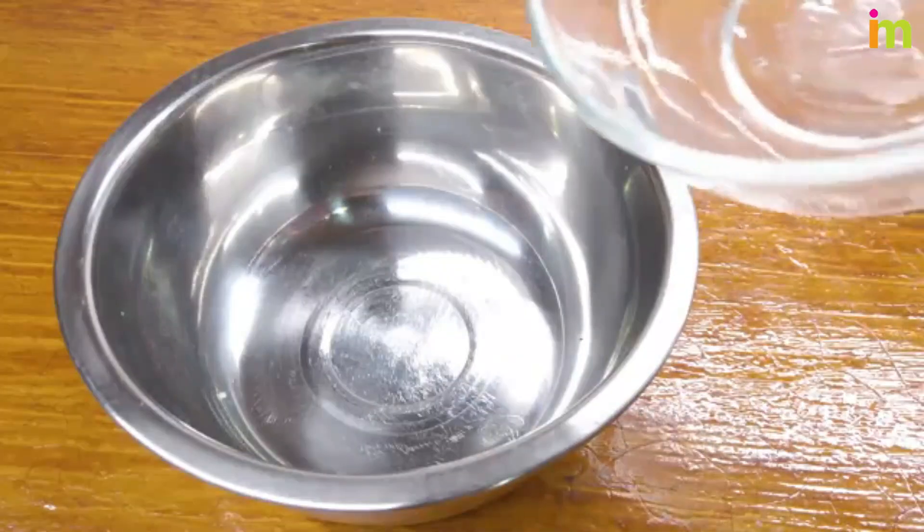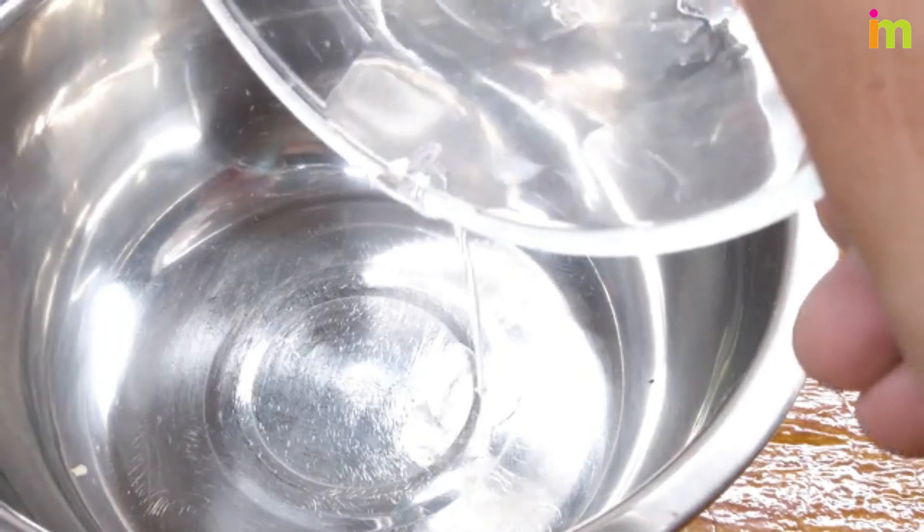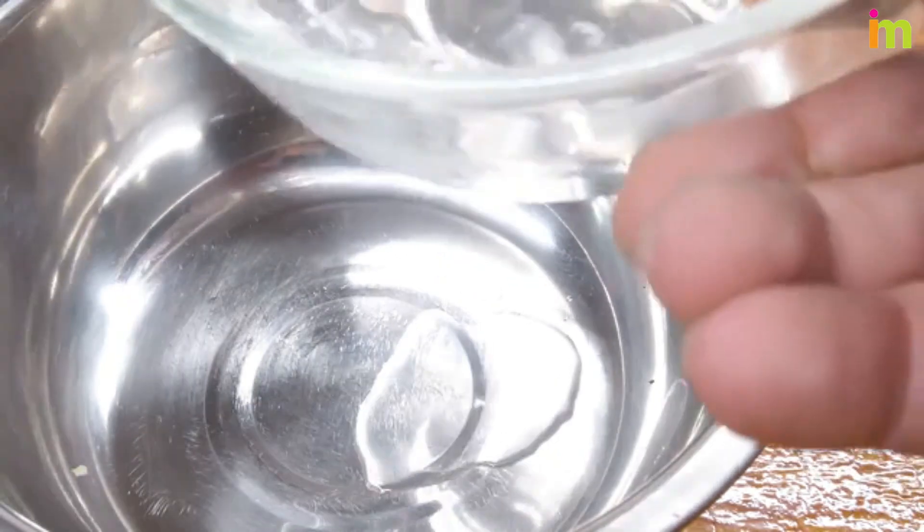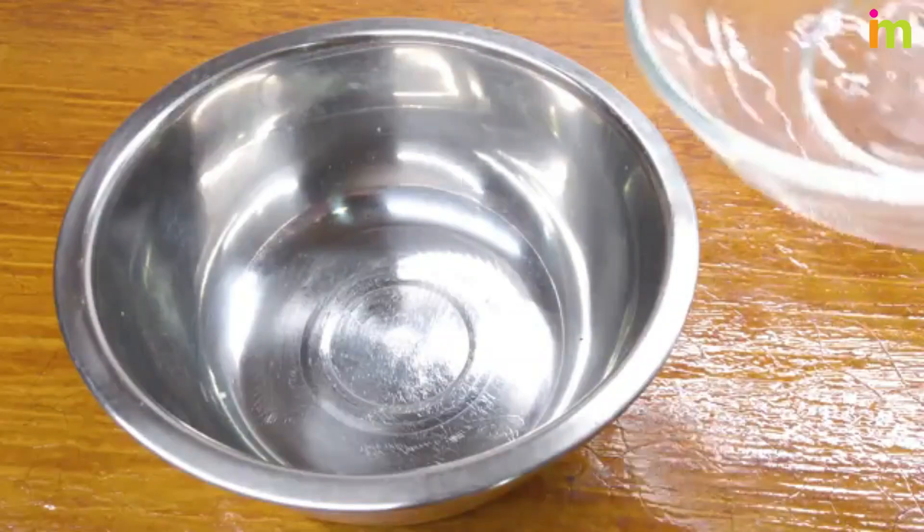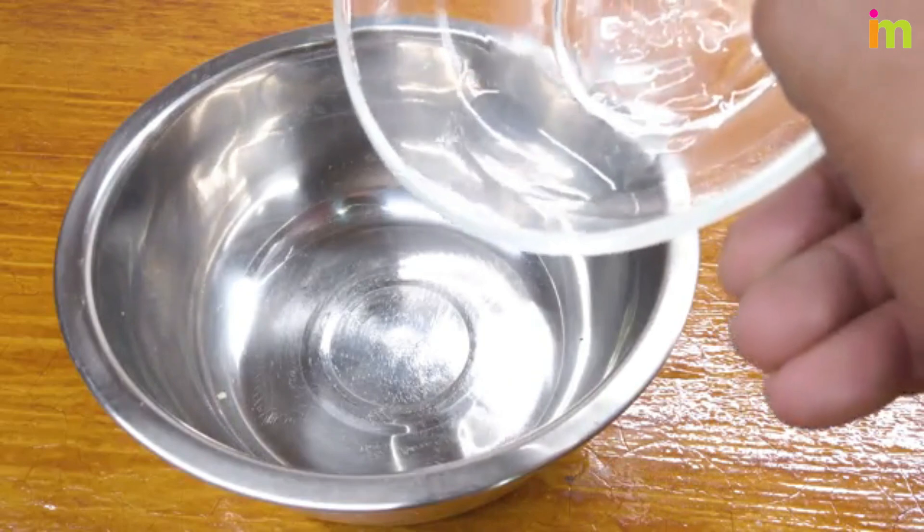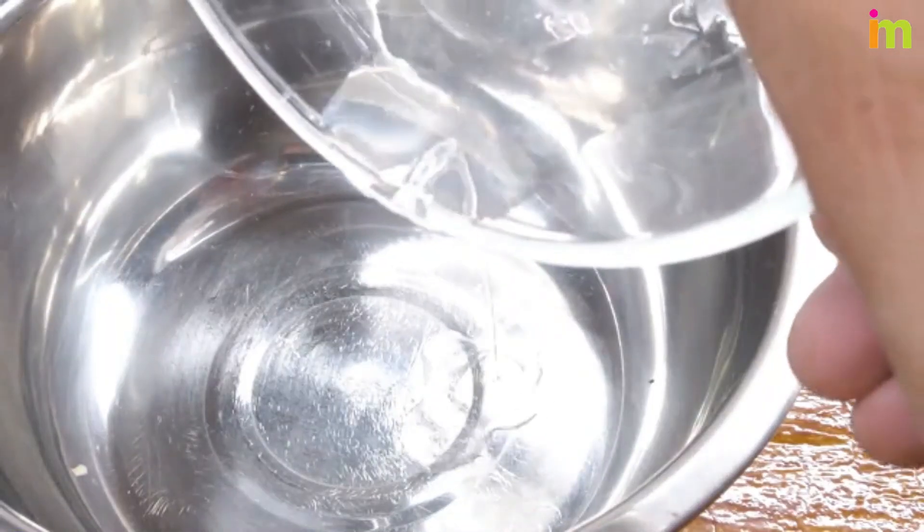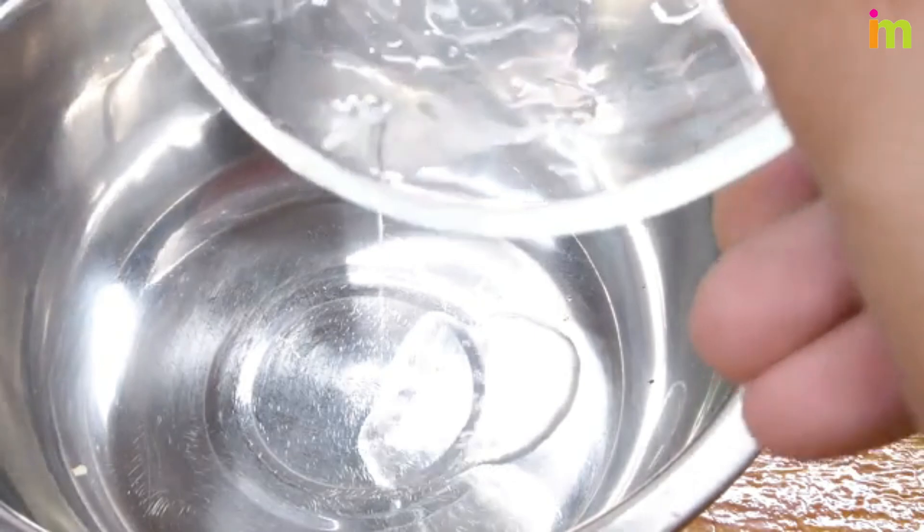Once the pieces of plastic have fully broken down in the acetone, they will separate and sink to the bottom of the container. Carefully drain the acetone in the sink, leaving only the melted plastic behind. Be careful not to breathe in the fumes.